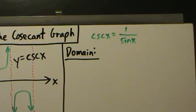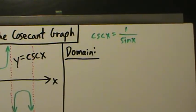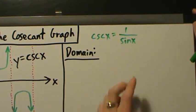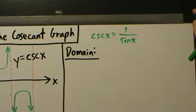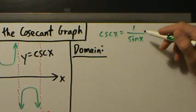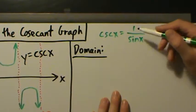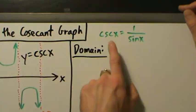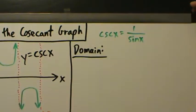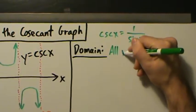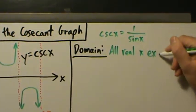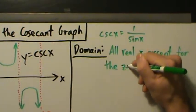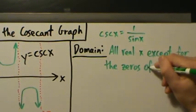Basically, the domain is everywhere except where sine of x equals zero — all values of x except the values that make sine equal to zero. The reason is sine of x by itself has no domain restrictions; you can take the sine of any number you want. But cosecant is 1 divided by sine, so sine of x is not allowed to be zero for the cosecant to actually be defined. So the domain is all real x except for the zeros of sine.